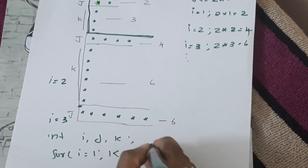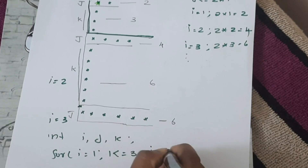Now we initialize i, j, k. This loop is for i equal to 1, i less than equal to 3 times, i increment. i is 1 time, then i is 2 times, i is equal to 2 times, i is equal to 3 times.